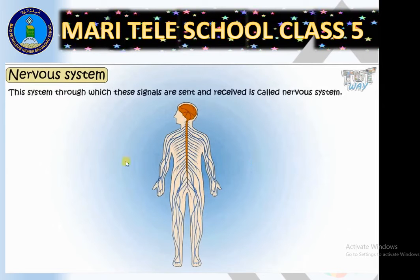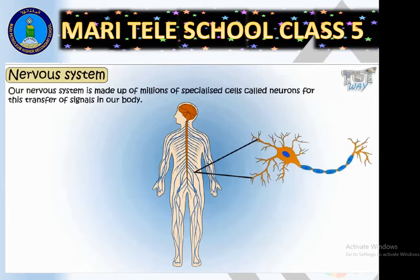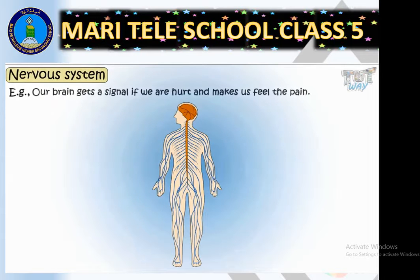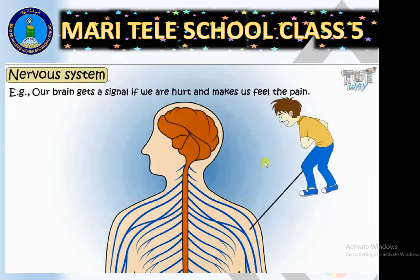Behind every activity, the brain is involved. This system through which these signals are sent and received is called the nervous system. Our nervous system is made up of millions of specialized cells called neurons, which are responsible for the transfer of signals in our body. For example, our brain gets a signal if we are hurt and makes us feel pain.